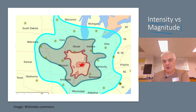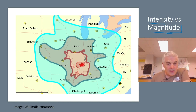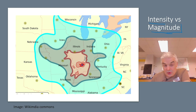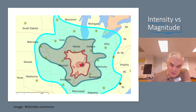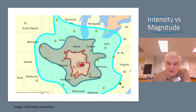Magnitude is how strong it is where it originates. But if you have an earthquake right here — we're in southern Illinois — this is called the New Madrid earthquake. It's an interesting earthquake that happened around 1815 or so, and the intensity was felt, obviously, closest to here, but this earthquake was felt as far as Wisconsin.